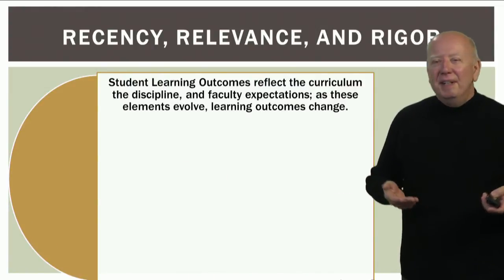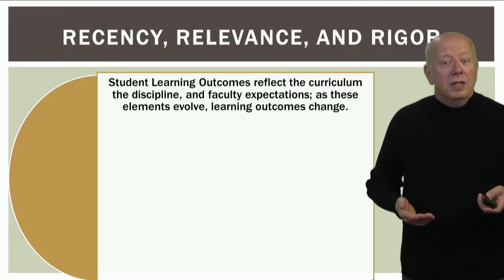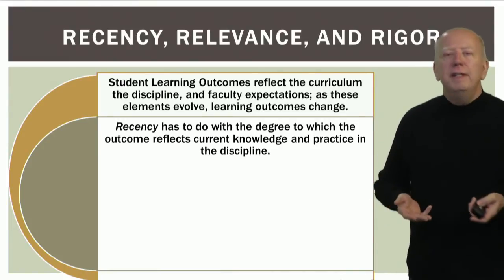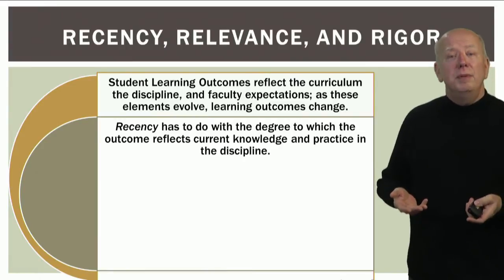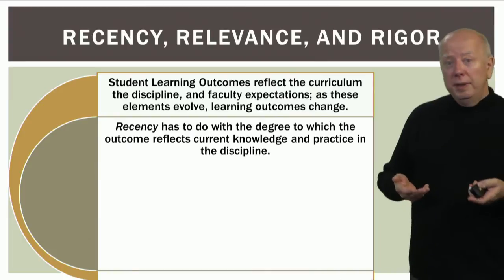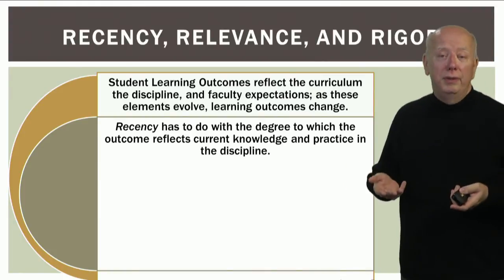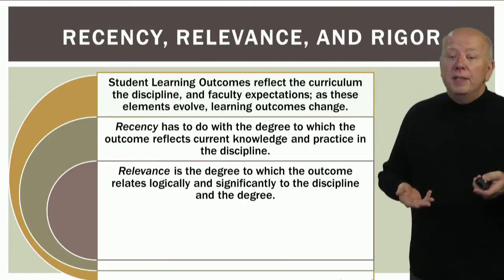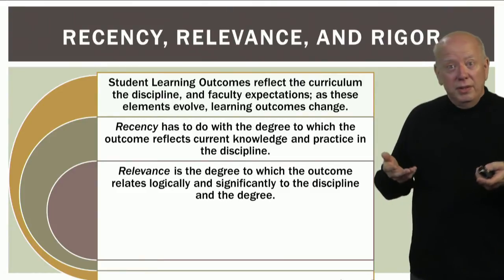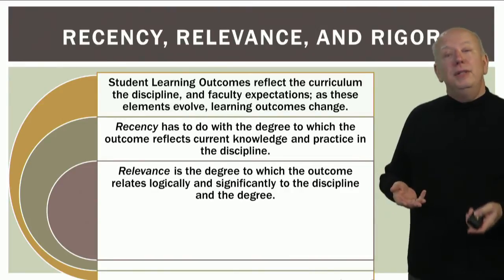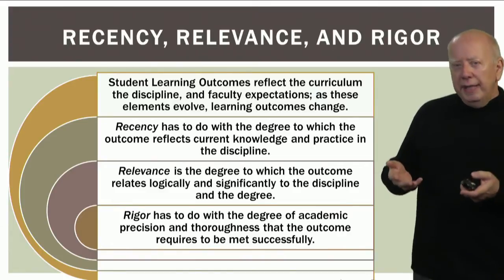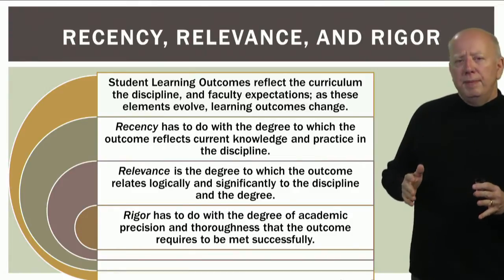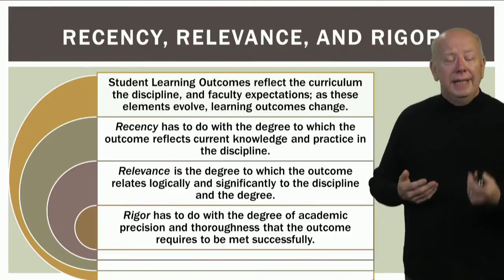Recency, relevance, and rigor are important things to keep in mind in all of our student learning outcomes. Recency has to do with the degree to which the outcomes reflect current knowledge and practice in the discipline — it is a faculty responsibility to revise student learning outcomes periodically. Relevance has to do with the degree to which the outcome logically relates to the discipline and the degree. Rigor has to do with the degree of academic precision and thoroughness that the outcome requires to be met successfully.